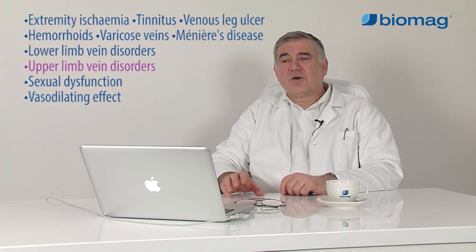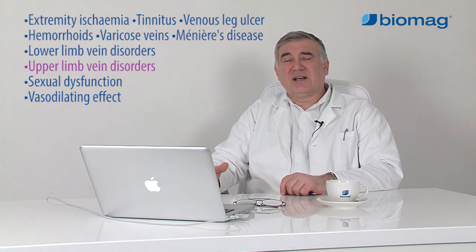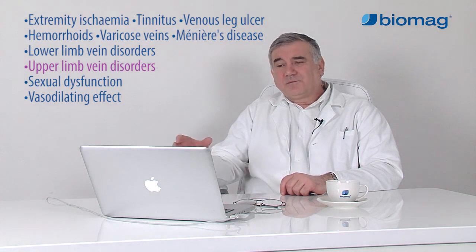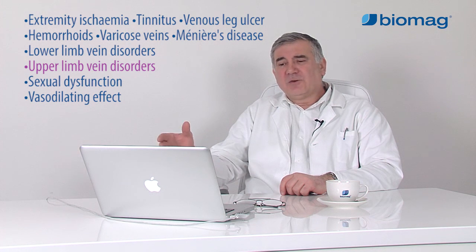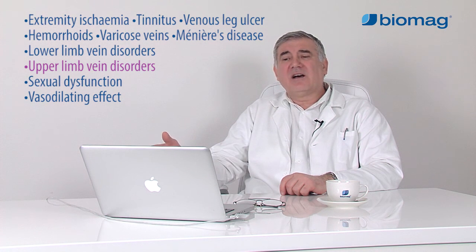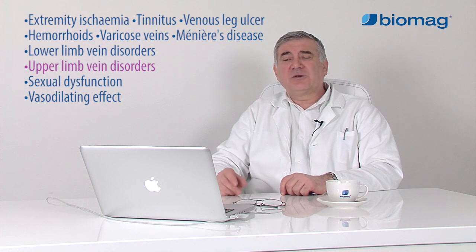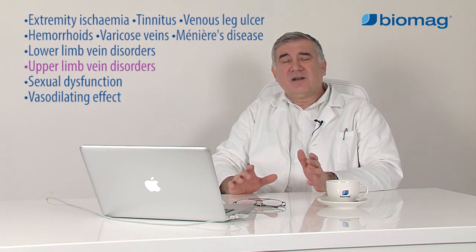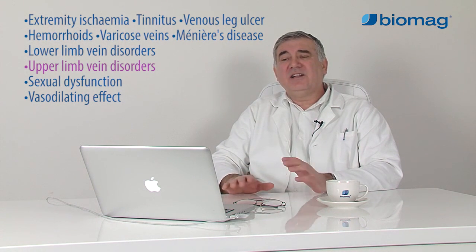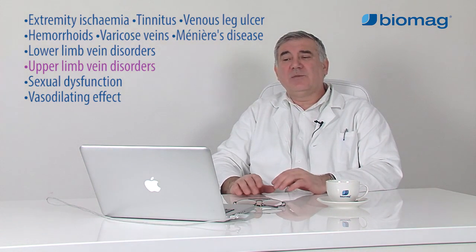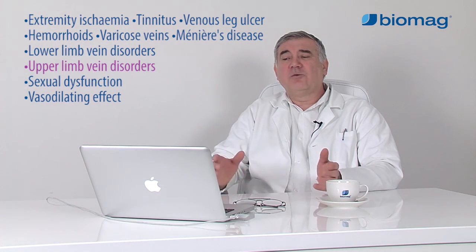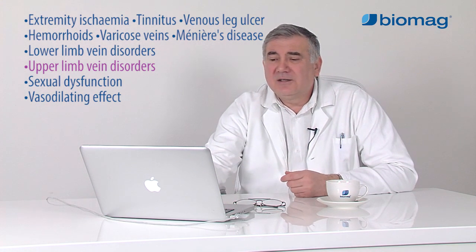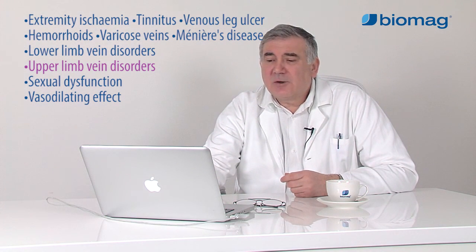Upper extremity ischemia is less frequent. However, it is usually also caused by arteriosclerotic changes. The distal type, Raynaud's phenomenon, is more common. It is a local vasoneurosis in which so-called white dead fingers develop.